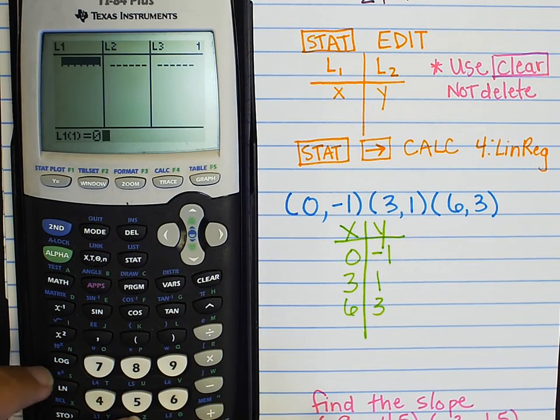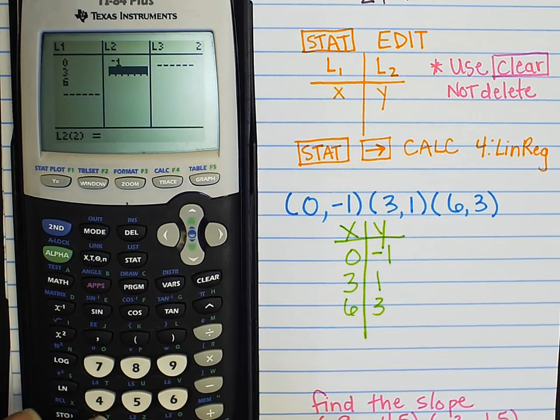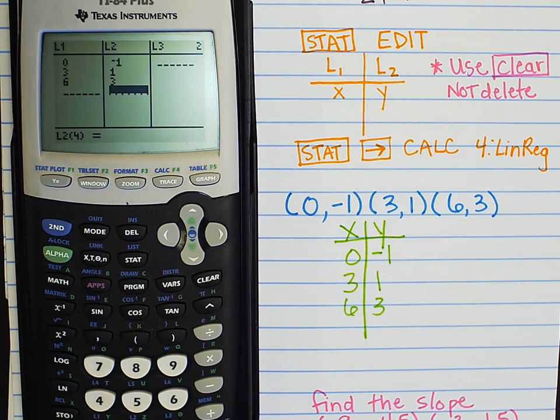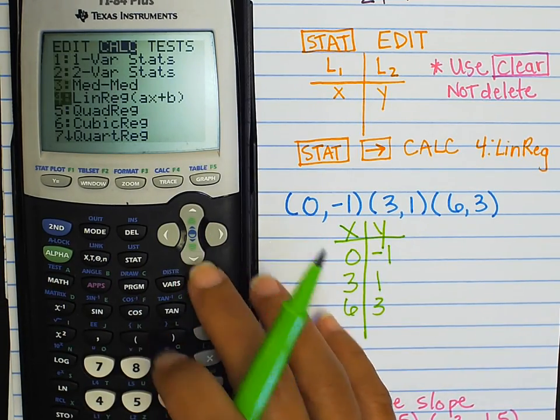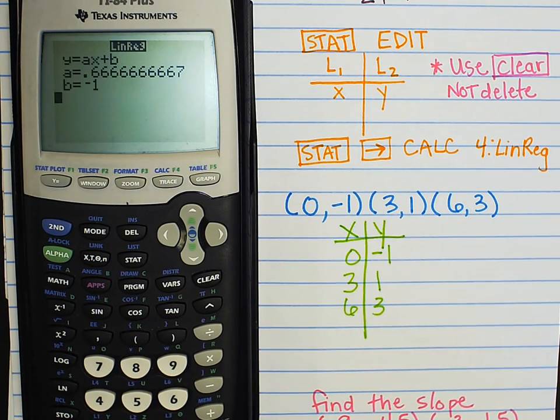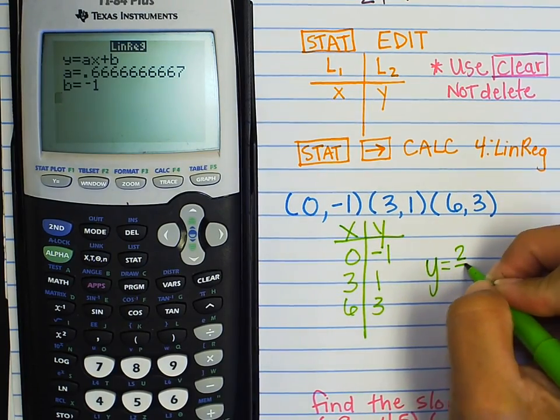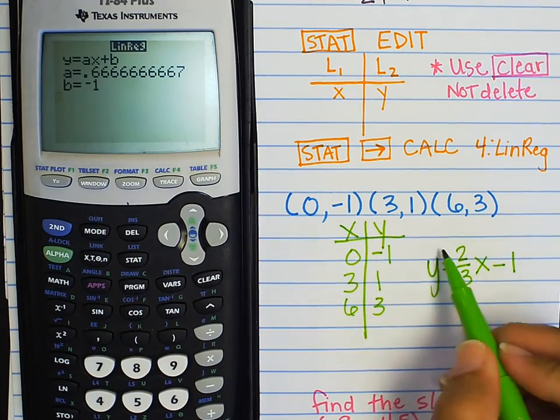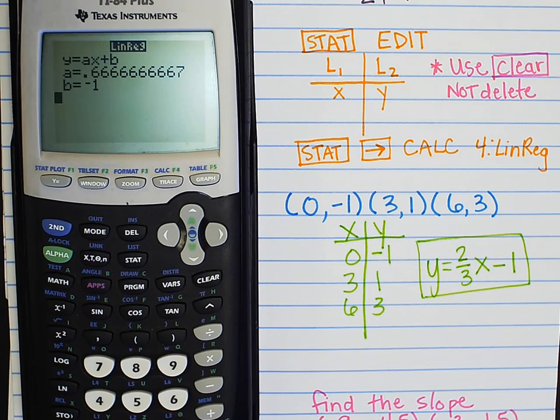So, I'm going to type the table in. Zero, three, six are my Xs. My Ys are negative one, one, three. I have my table typed in. I now go to stat, over to calc, down to linear regression, and I hit enter until I get my answer. And I can see that my A is the repeating decimal of 6.666, and my B is negative one. So, I'm going to write that as 0.6667 is equivalent to 2 thirds. So, with the push of a few buttons, you can write the equation of a line given some points.